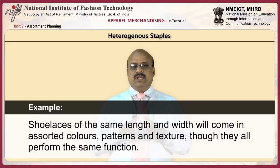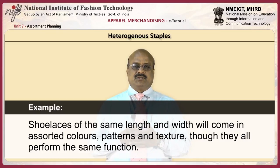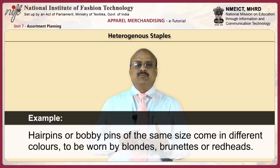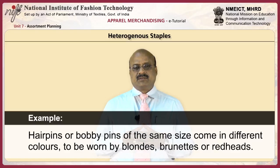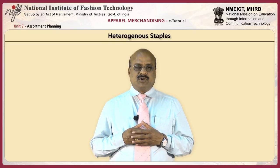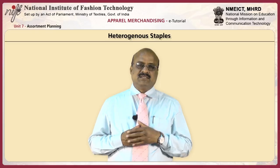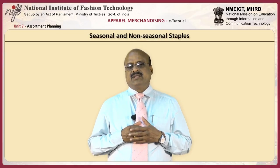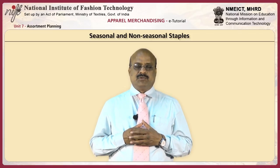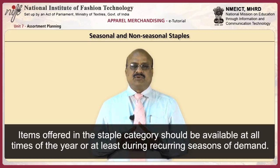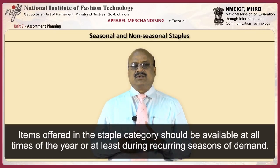Hairpins or bobby pins of the same size come in different colours to be worn by blondes, brunettes, and redheads. The buyer must plan the staple stock according to the similarities and differences that exist among the staple goods available. A second factor the buyer should consider is seasonal and non-seasonal staples. Items in the staple category should be available at all times of the year or at least during the recurring seasons of demand. For example, some staples such as hardware, foodstuffs, and toiletries are in demand regularly throughout the year and are not affected by seasonal variations.